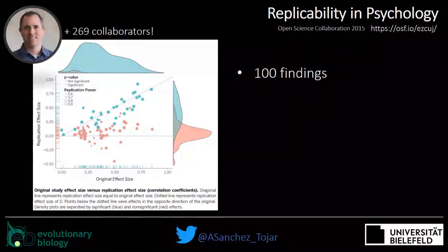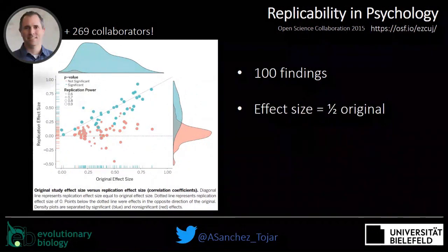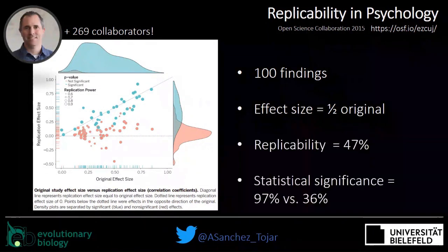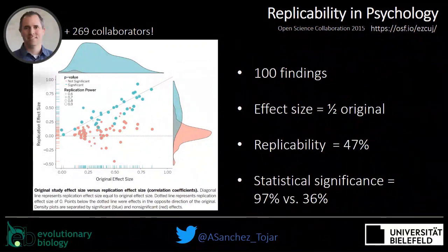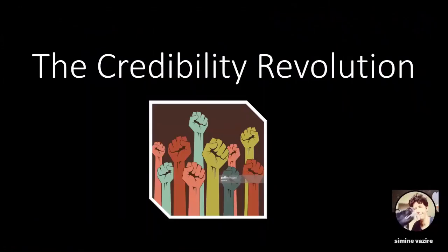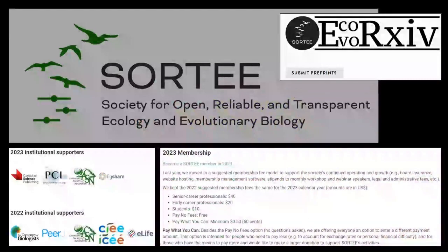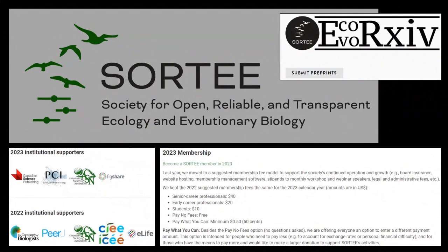The findings were a bit shocking for many people. The overall effect size seemed to be about half that of the original studies, and replicability was estimated at around 50 percent, with a lot of the evidence not being statistically significant compared to how the original evidence was. That started what I like to call, rather than the replication crisis, the credibility revolution — a term I believe was first used by Simine Vazire — and also got us more interested in the open science movement, with societies such as SORTEE appearing, preprint servers such as EcoEvo Archive, and many new journal and funding policies.